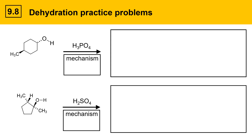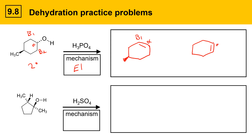On the next slide, we have molecules with stereochemistry. In the top example, we have a secondary alcohol, and secondary alcohols react by E1. The OH group gets protonated by phosphoric acid, it leaves to give a carbocation, and then the carbocation can be deprotonated at either of two beta positions — beta 1 and beta 2 — leading to two different stereochemical outcomes. These two products are actually enantiomers of each other: non-superimposable mirror image molecules.